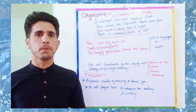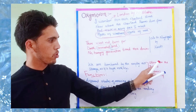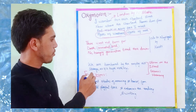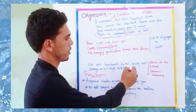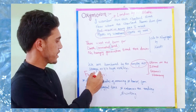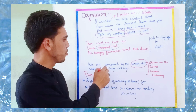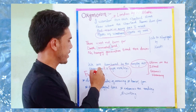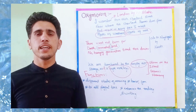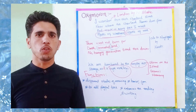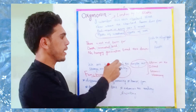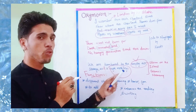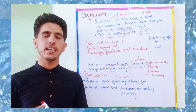Another example is from the poem 'Storm on the Island' written by famous modernist writer Seamus Heaney, where the poet says: 'We are bombarded by the empty air' and 'strange as it is, huge nothing.' In these lines you can see two oxymorons being used. First, 'bombarded by the empty air' — and second, 'huge nothing.' Huge and nothing together form an oxymoron.